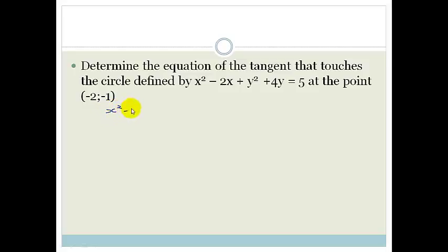We've got x squared minus 2x plus y squared plus 4y is equal to 5. Now, I don't know if you remember how to complete the square. So let's do it very slowly. We write down x squared minus 2x. And what do we do? To complete this square, we add. And what do we do? We half this and we square it. So it becomes 2 divided by 2 all squared.